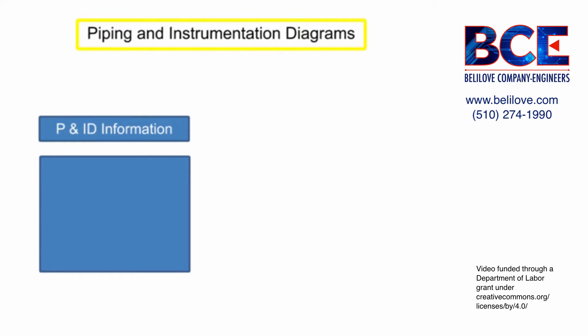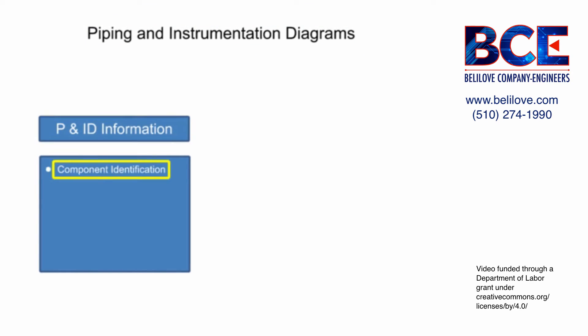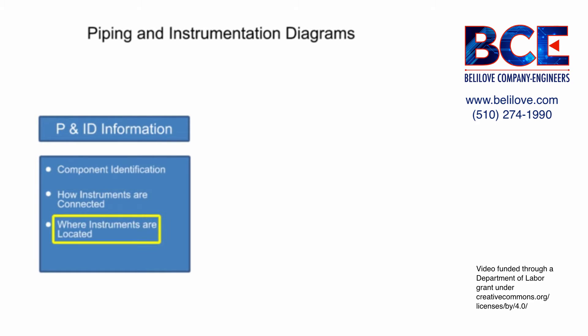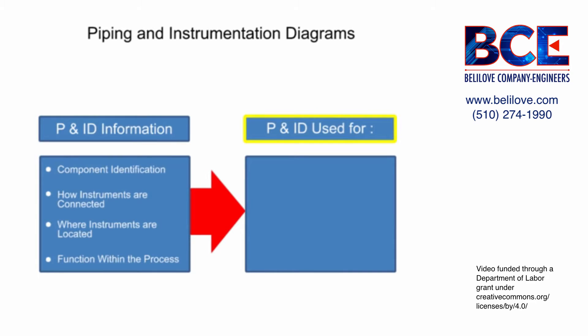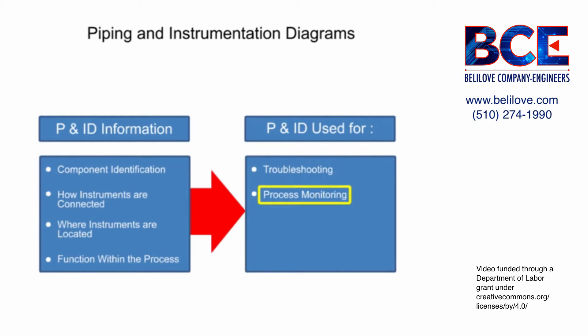Piping and instrumentation diagrams provide information that includes component identification, how instruments are connected, where instruments are located, and their function within a process. Comprehension of P&ID diagrams assists technicians when troubleshooting and monitoring specific processes.